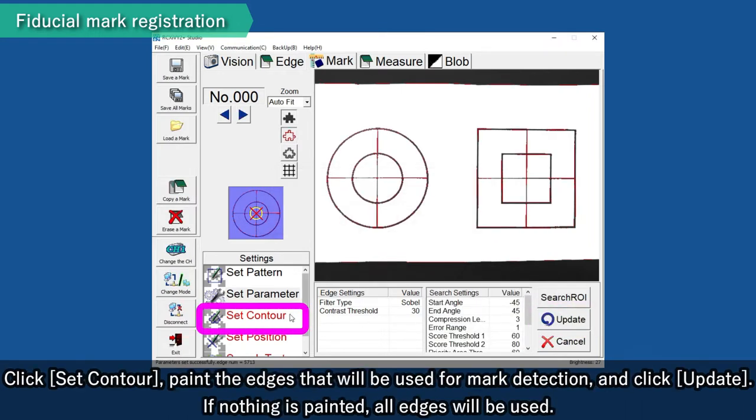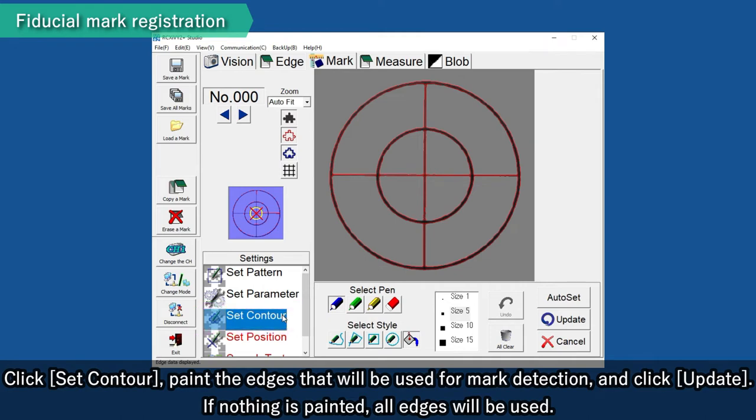Click Set Contour, paint the edges that will be used for mark detection and click Update. If nothing is painted, all edges will be used.